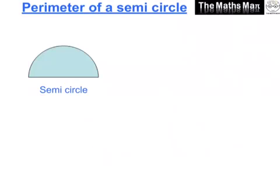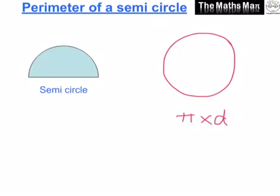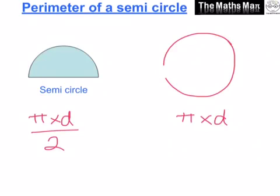Next we need to work out the perimeter of a semicircle. To work out the perimeter of a circle we do pi times diameter. Now a semicircle as we said is half of a circle. So what if we did pi times diameter and divide it by two? Well, pi times diameter gives us the circumference or perimeter of this circle. If we now divide that by two we'll be working out half of the perimeter of this circle — we would in fact be getting half of this.